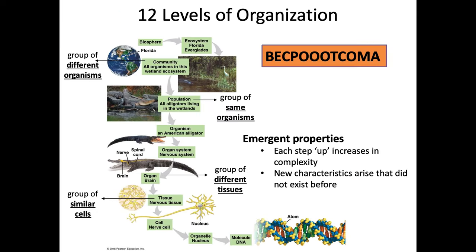In biology, there are 12 levels of organization, like a hierarchy of how things are organized. In science, we like to categorize things, arrange things, organize things. You have what's called emergent properties, which means that every level you go up, it increases in complexity. It becomes more interesting, more complicated.